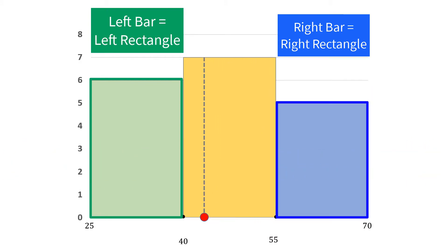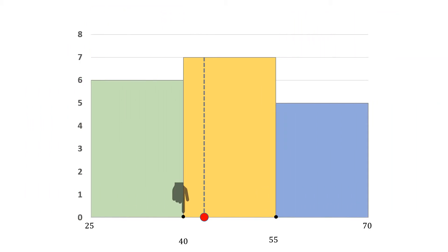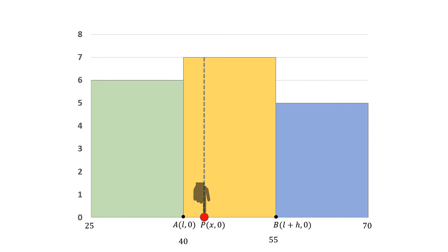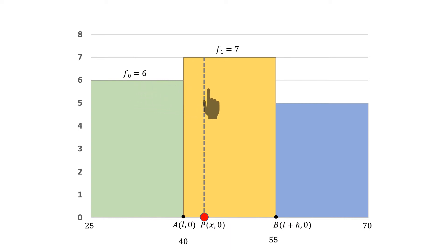But what will happen when the frequencies of the left and right bars are neither equal to each other, nor equal to the frequency of the modal class? In this case, the vertical line will be somewhere between the lower and upper limit of the modal class. Let us consider the lower limit of the modal class as point A with coordinates (L, 0), the upper limit as point B with coordinates (L + H, 0) where H is the class width, and the coordinates of point P as (x, 0). Here, the value of x is equal to the mode. Let frequency of the modal class equal F₁, frequency of the preceding class equal F₀, and frequency of the succeeding class equal F₂.